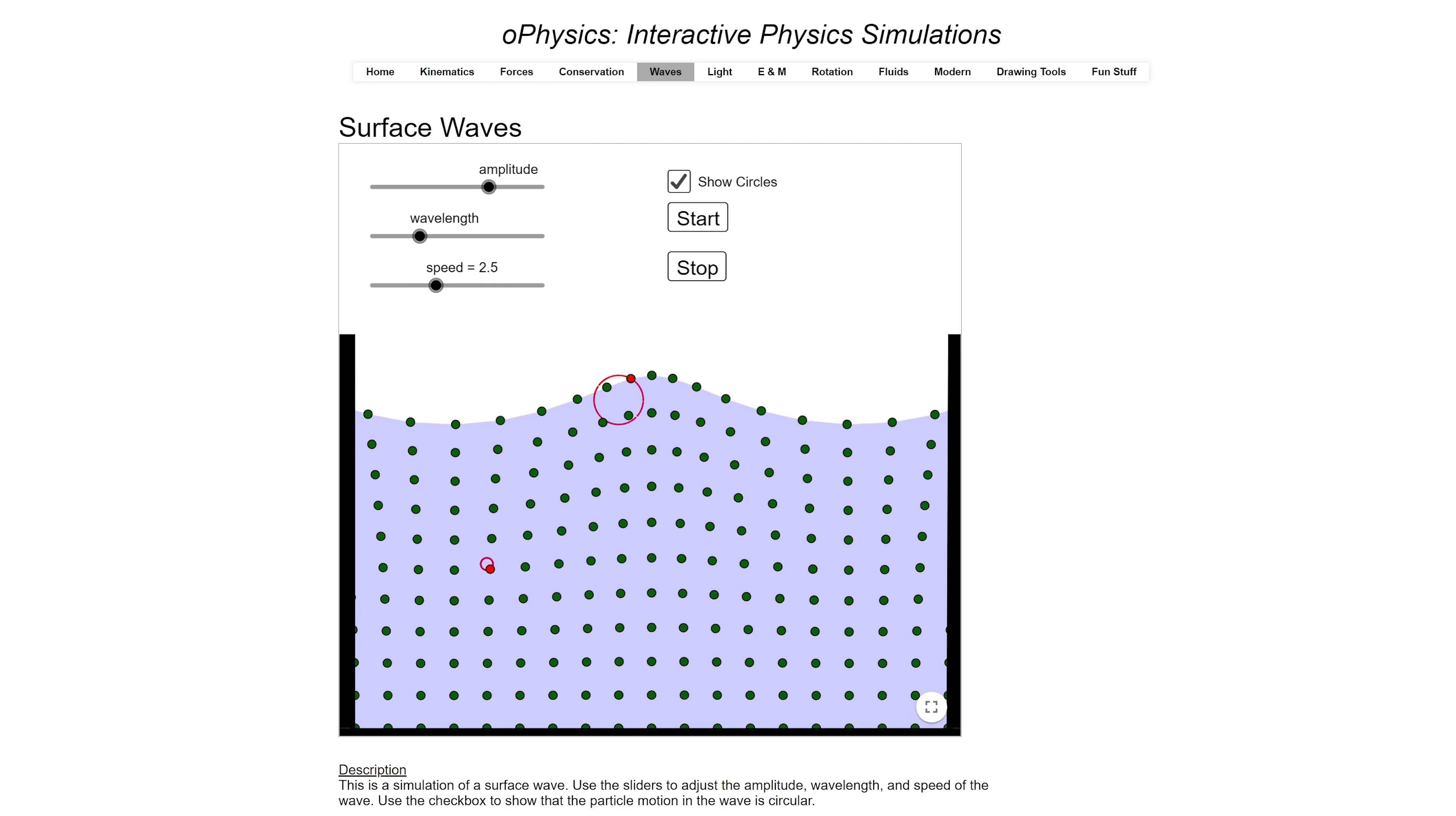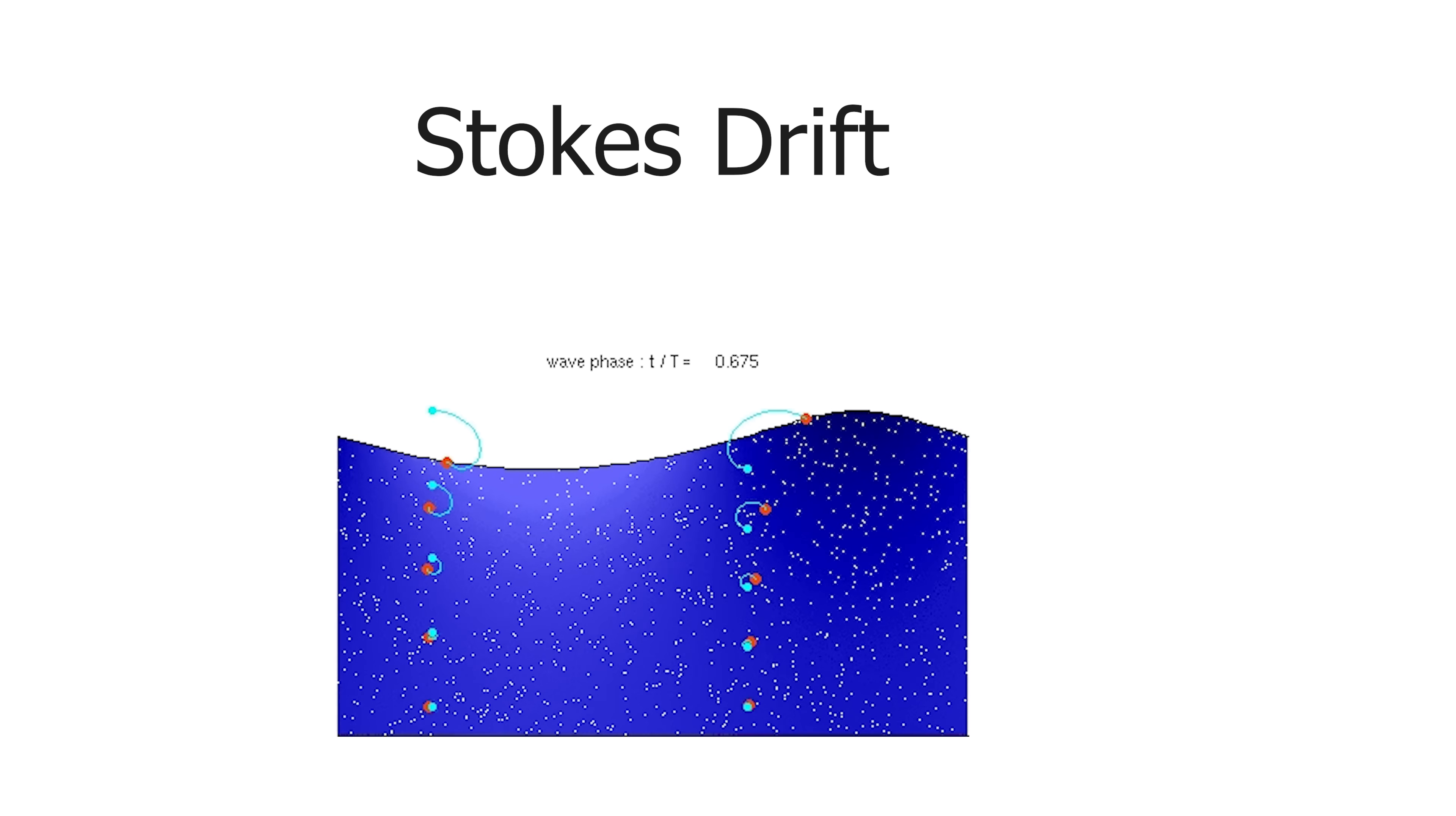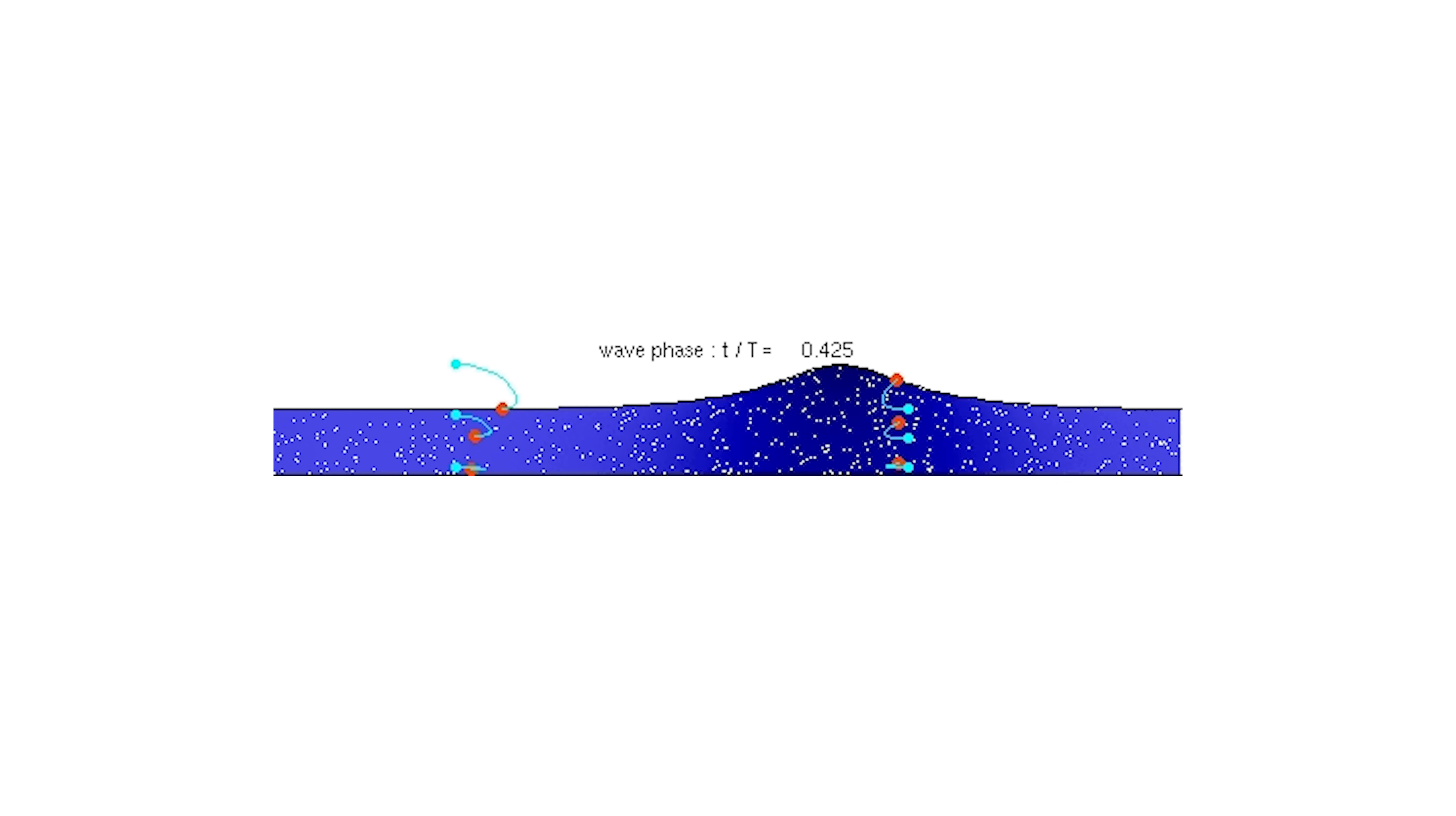But this isn't exactly true. Because the velocity at the top of the circle is faster than the bottom of the circle, there's actually a net movement of each individual water particle moving with the waves. So it makes these loops that get pushed along with the wave. So anything floating on the surface of a regular wave will actually be pushed away from the wave source.